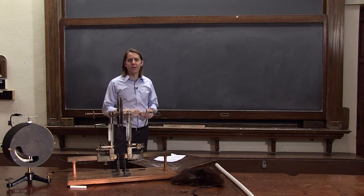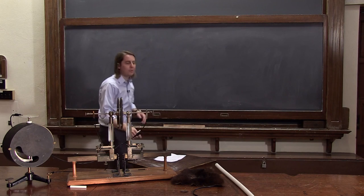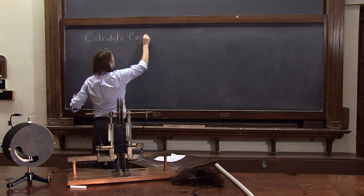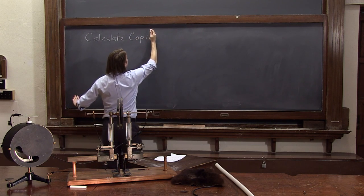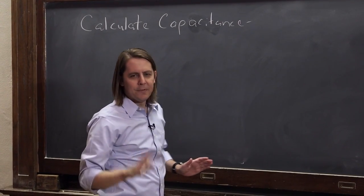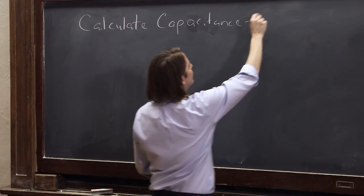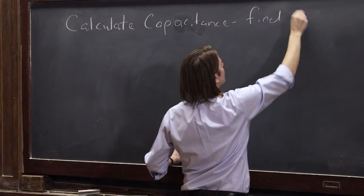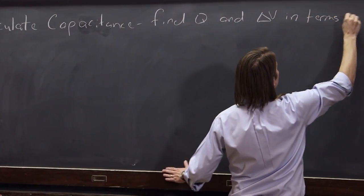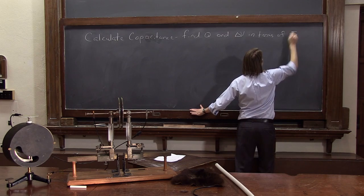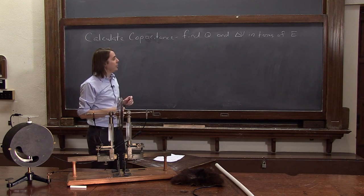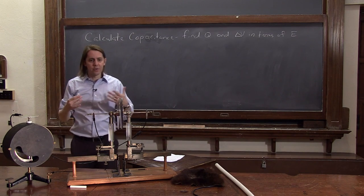Now we're going to calculate capacitance. Before we worry about a specific geometry, let's talk about the general strategy to calculate a capacitance. Basically, what you want to do is find Q and delta V in terms of the electric field for the geometry of your actual capacitor. The capacitor we're going to do, we're going to start with the canonical capacitor, the parallel plate capacitor.